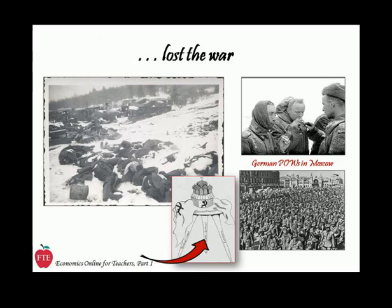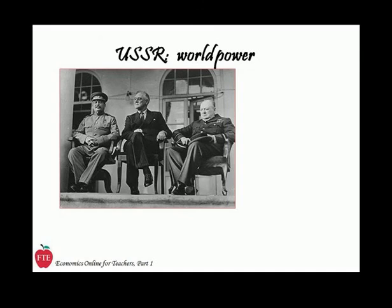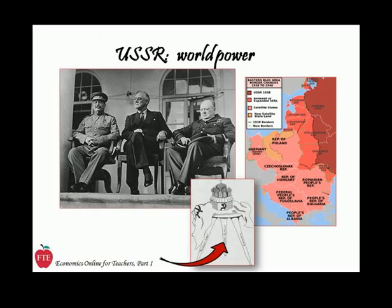Belief in the communist system by citizens of the USSR was at an all-time high following World War II. Not only did the Soviet Union emerge victorious, it emerged a world leader — Stalin sitting front and center on the world stage with Roosevelt and Churchill. In the division of territories after the war, the Soviet Union realized the age-old vision and communist goal of empire, which also added strength to the moral-cultural leg of the stool.